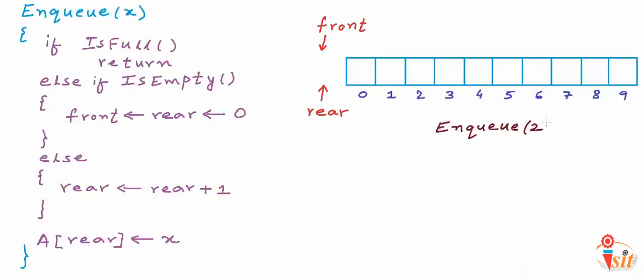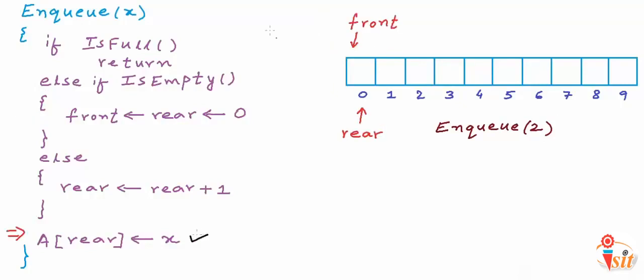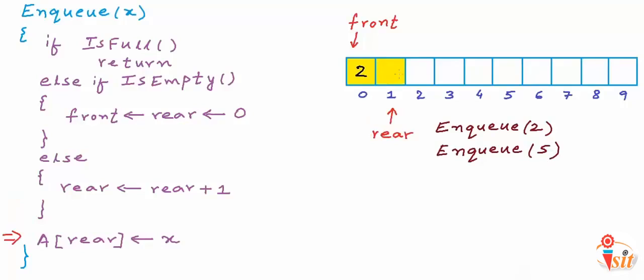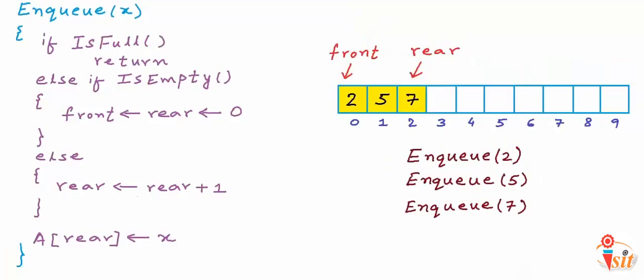Let's simulate enqueue operations on the example array. First, I enqueue number 2. The queue is empty so we set both front and rear to 0 and write value 2 at index 0. Then I enqueue number 5 — the queue is not empty, so rear is incremented and value 5 is written at the new rear index. Then I enqueue 7 in the same manner.